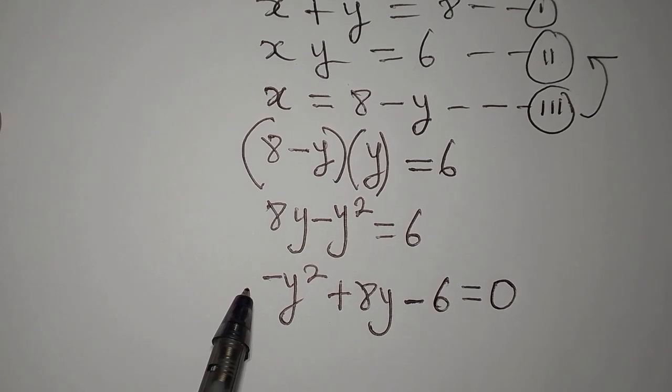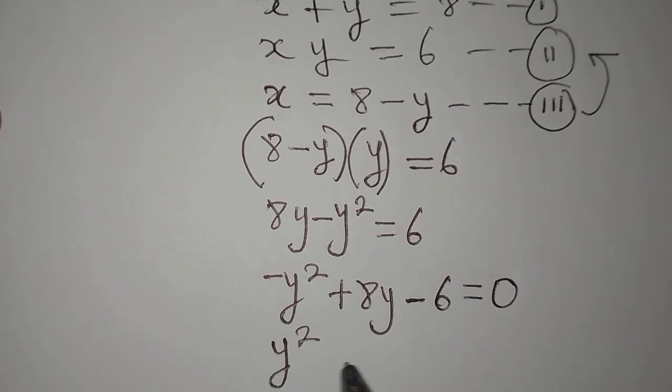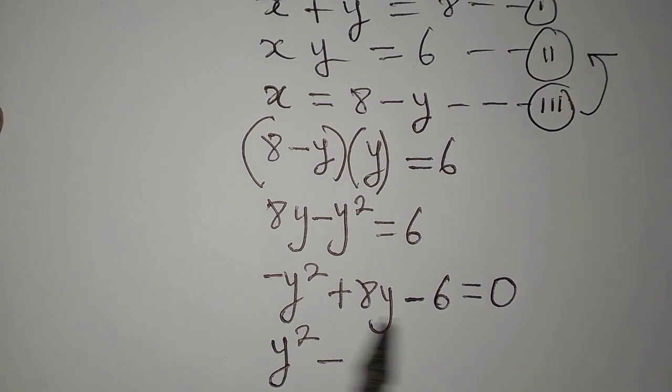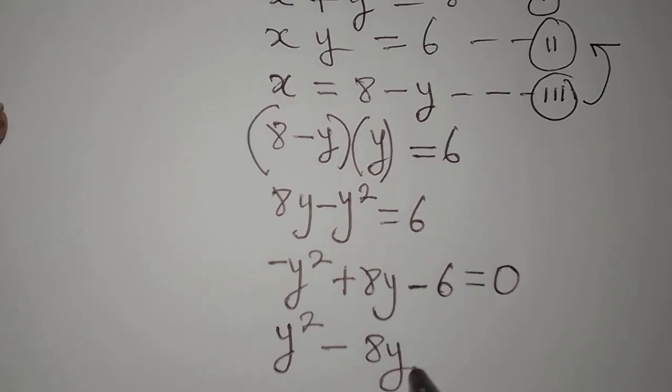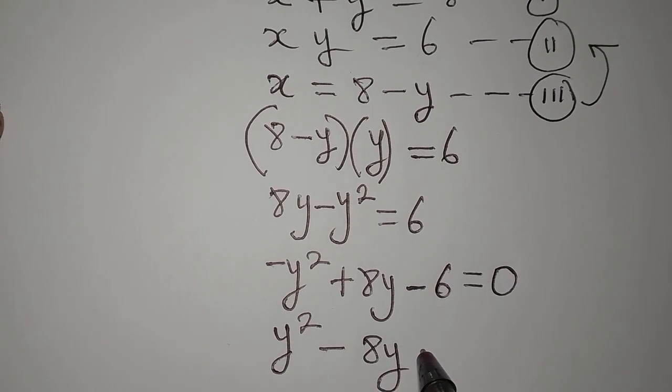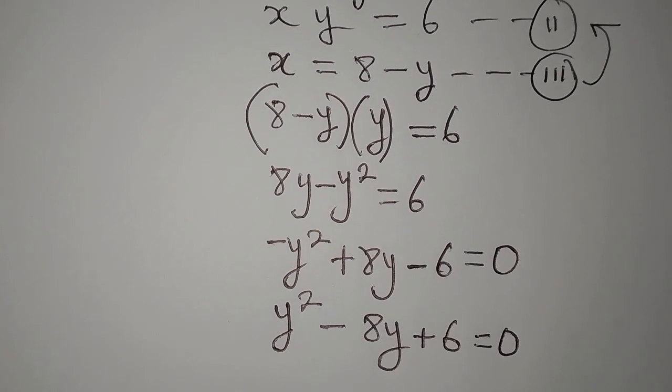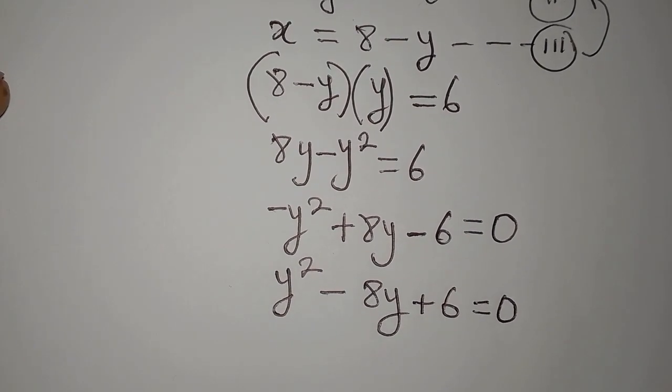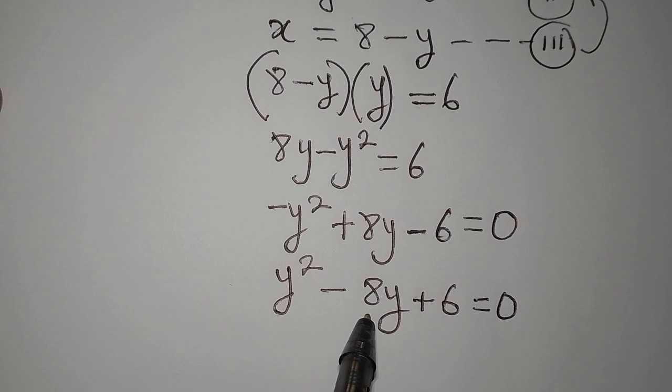But we need to remove this negative from here. So that if we do that, we shall have y squared. Then this negative will turn every other sign, we'll change it to the other side. From the positive to negative. And then from negative to positive, right? This is equal to 0. We do not have anything like negative 0 or positive 0. Now, let's solve this. What two numbers do we multiply to get 6 and we add them to get minus 8?